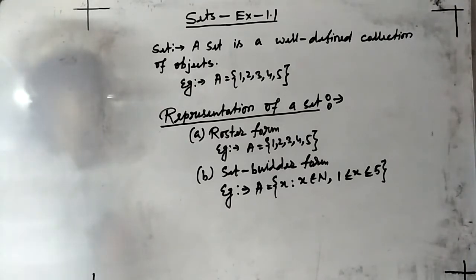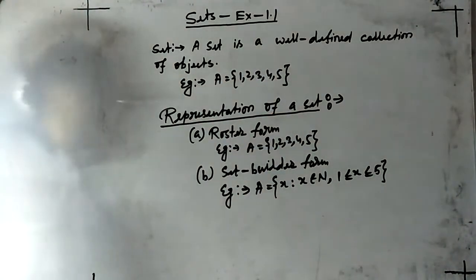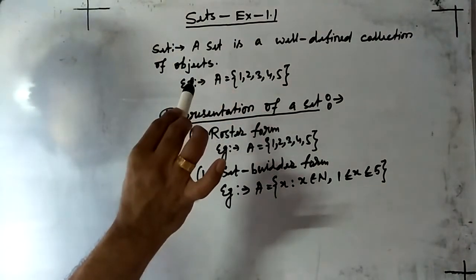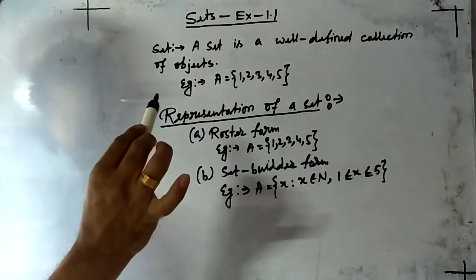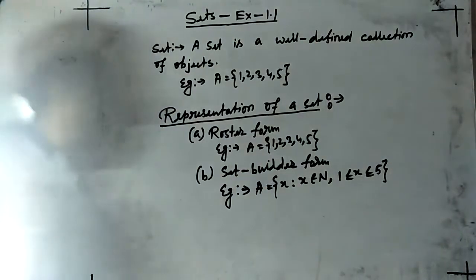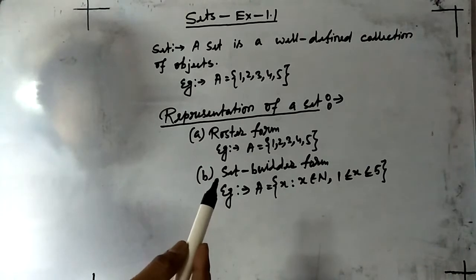So here, definition of set. Set is a well-defined collection of objects. So what is set? If you collect some objects and if that collection is well-defined, it is not like that person to person it is different.